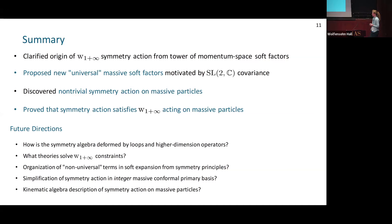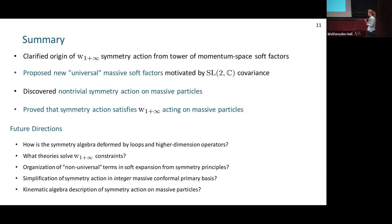Open questions include: how is the symmetry algebra deformed by loops and higher-dimension operators? What theories satisfy the W or deformed-W constraints? Is there an organization of the non-universal terms in the soft expansion from symmetry principles? In celestial holography, is there a simplification of the symmetry action on massive conformal primary states — perhaps for integer dimensions delta? And is there a kinematic algebra description of the symmetry action on massive particles, as there is for massless ones?